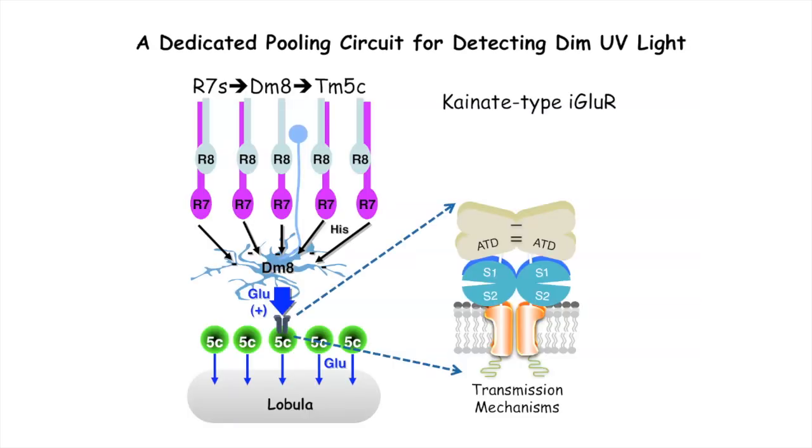By looking into the synaptic mechanism, we determined that Tm5c uses kainate-type ionotropic receptors to receive excitatory glutamatergic input from Dm8.